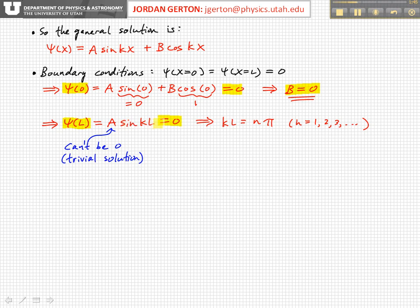Which means that the argument kL of the sine wave, kL, has to be equal to an integer multiple of π, because it's those integer multiples of π where sine is equal to zero. So this, the second boundary condition, the fact that the wave function has to be zero at x equals L, gives us this constraint, and basically gives us these discrete values that k can take on, so k can only take on values equal to nπ over L.